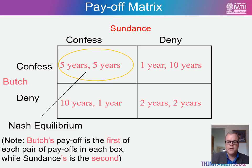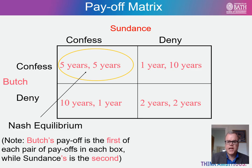Similarly, if Sundance decides to deny, the worst possible outcome he faces is a penalty of ten years in prison, arising if Butch chooses to confess. Both players know these payoffs and cannot communicate with one another. They will therefore each have a desire to minimize the risk of getting the worst possible sentence, and this can only be achieved if they both confess — in which case they both receive five years in jail. This is suboptimal: if only they could have coordinated and both denied, they would each get just two years. This outcome is what we call a Nash equilibrium.